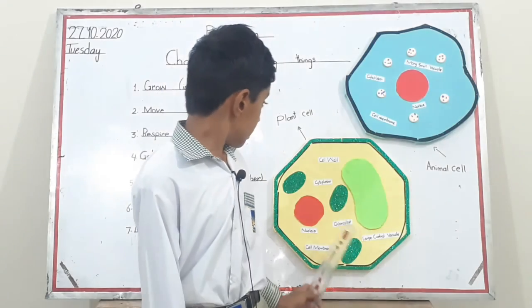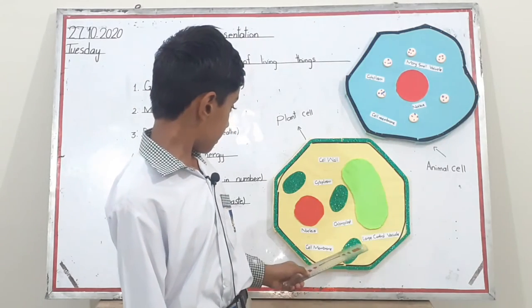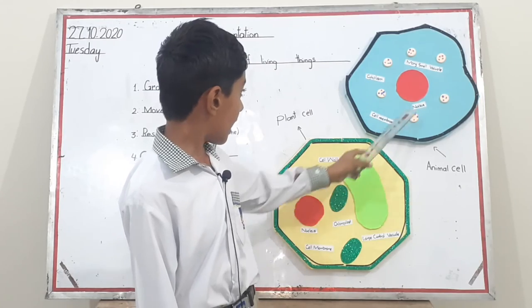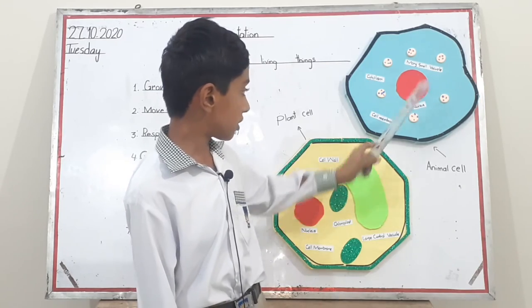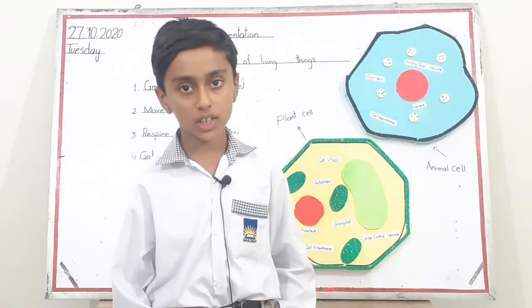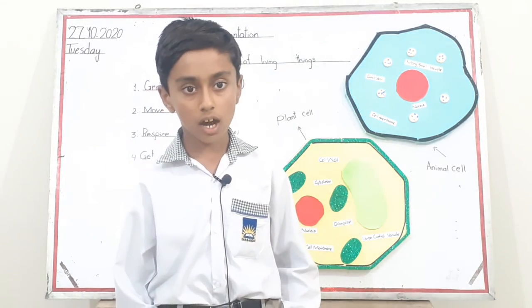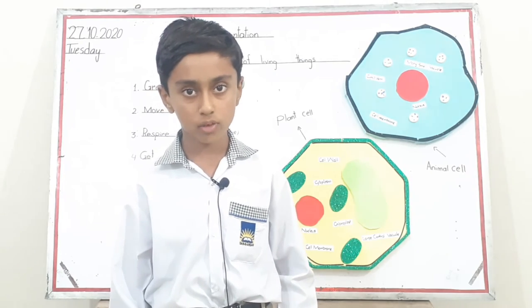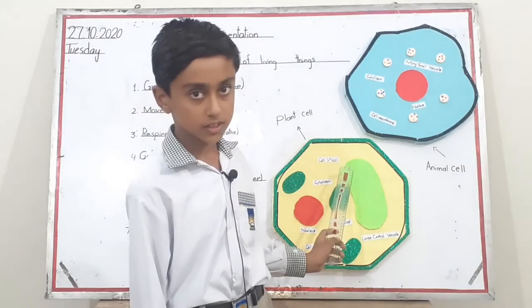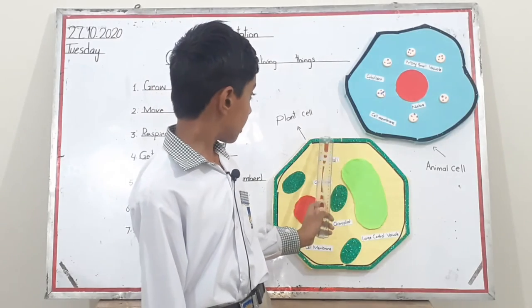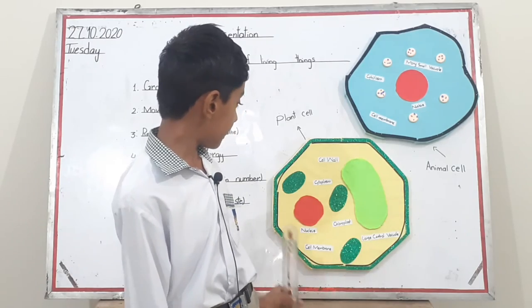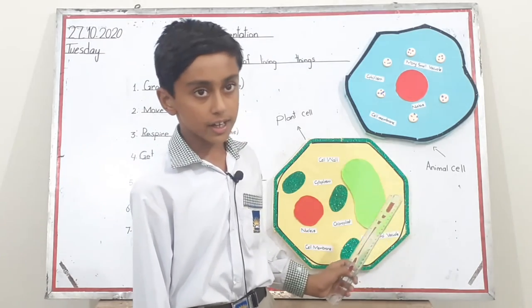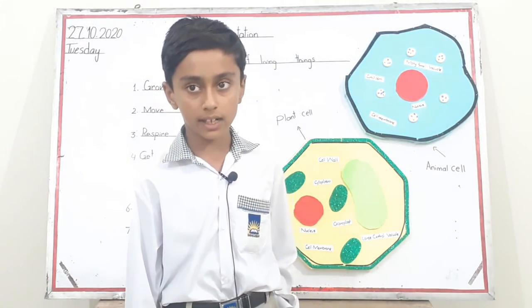Nucleus — you can see the nucleus in both cells. All the activities of the cell are controlled by the nucleus. Cell wall — the outermost covering of the plant cell is the cell wall. It supports and protects the plant cell.